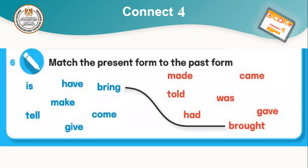Match the present form to the past form. We connect each present verb to its past form. The present verbs are in blue, the past verbs in red. We have: bring, is, till, have, make, come, give — and we match each to its past form.